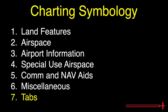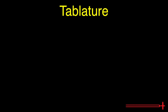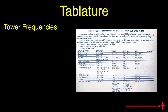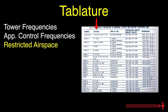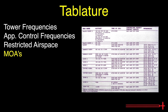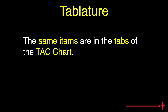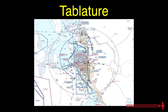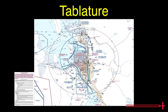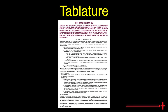The last thing we'll cover is the chart tabulation. The tabs offer helpful information — from top to bottom: a list of all control tower frequencies and operating hours, approach control frequencies, a list of restricted airspace including altitude limits, times of use, controlling agency names and frequencies. Below that, military operating area information is presented in the same format. Lastly, a list of VFR waypoints. The TAC chart tabs contain the same items. The VFR sectional has the same map format on both sides. TAC charts have VFR flyway planning charts on the back, depicting more detail for transition through Bravo airspace, with further VFR corridor instruction at the bottom left corner.